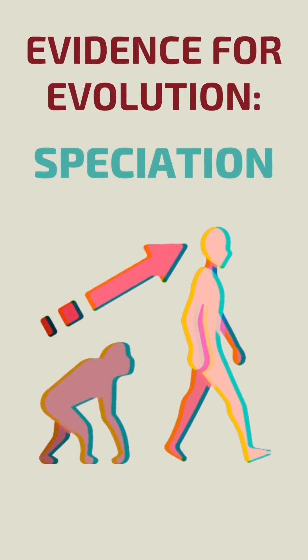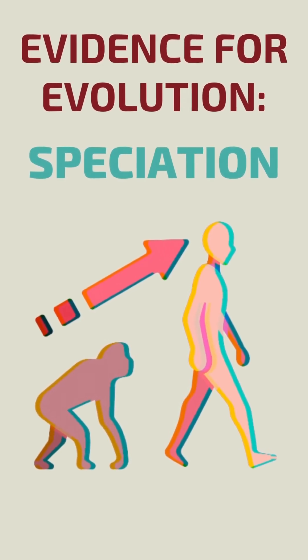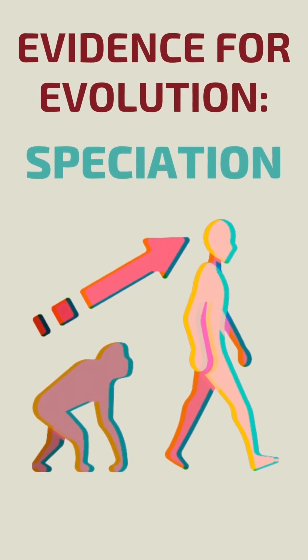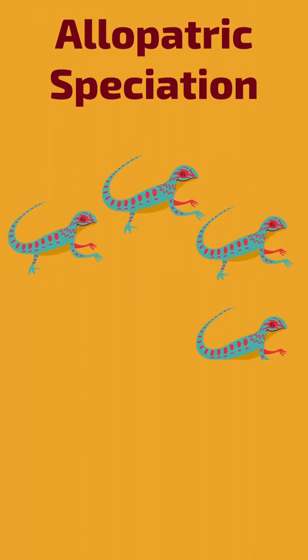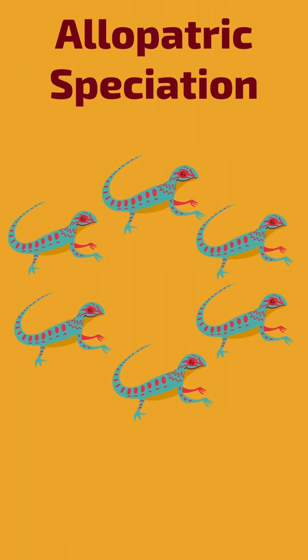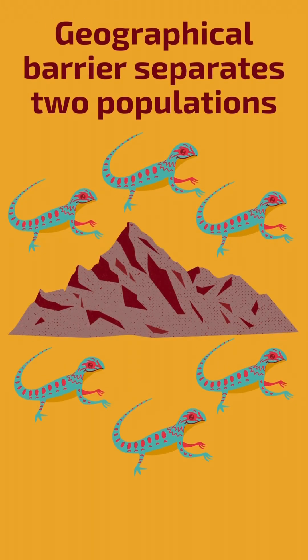Speciation is the process by which a single species splits into two or more descendant species. Allopatric speciation occurs when a population becomes geographically isolated from the rest of the species.